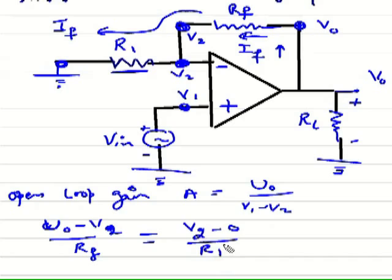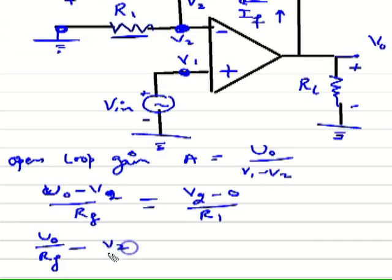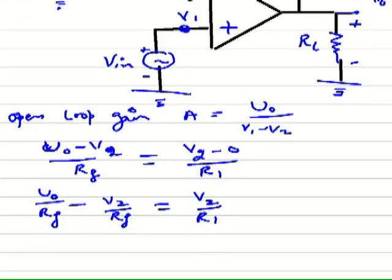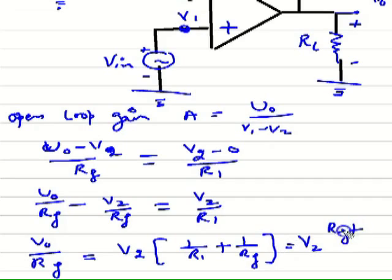Now we write IF using resistor R1: that is V2 minus 0 divided by R1. Now we simplify the expression. Setting the two IF expressions equal: Vout minus V2 upon RF equals V2 upon R1. Simplifying, we take V2 common and find V2 in terms of V-naught.